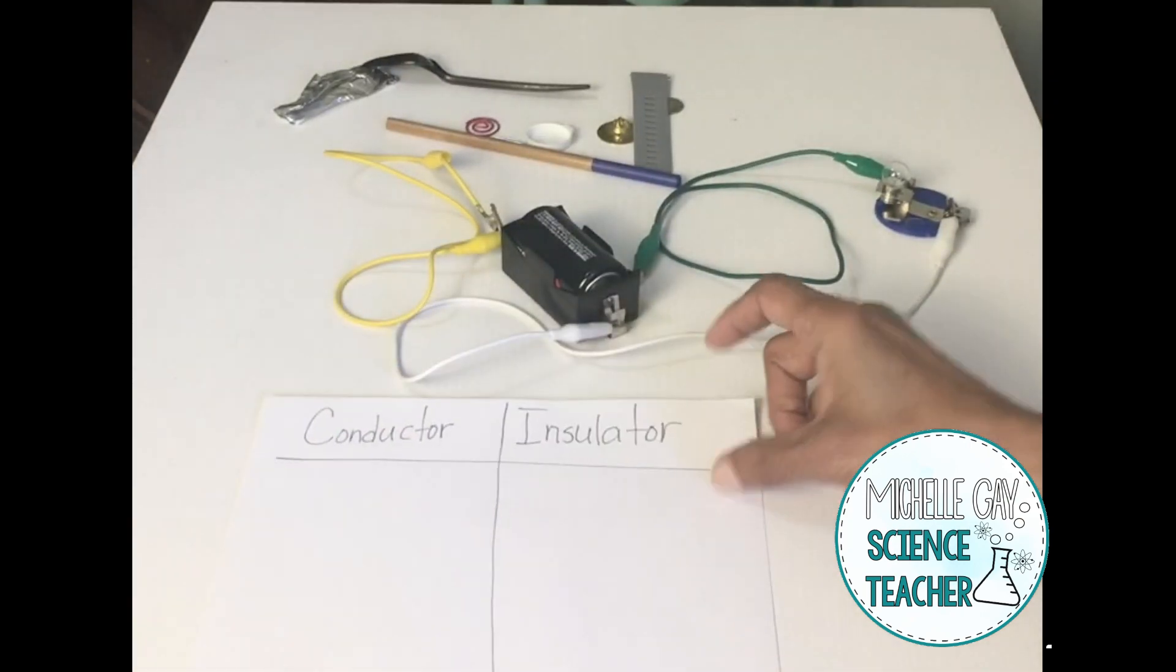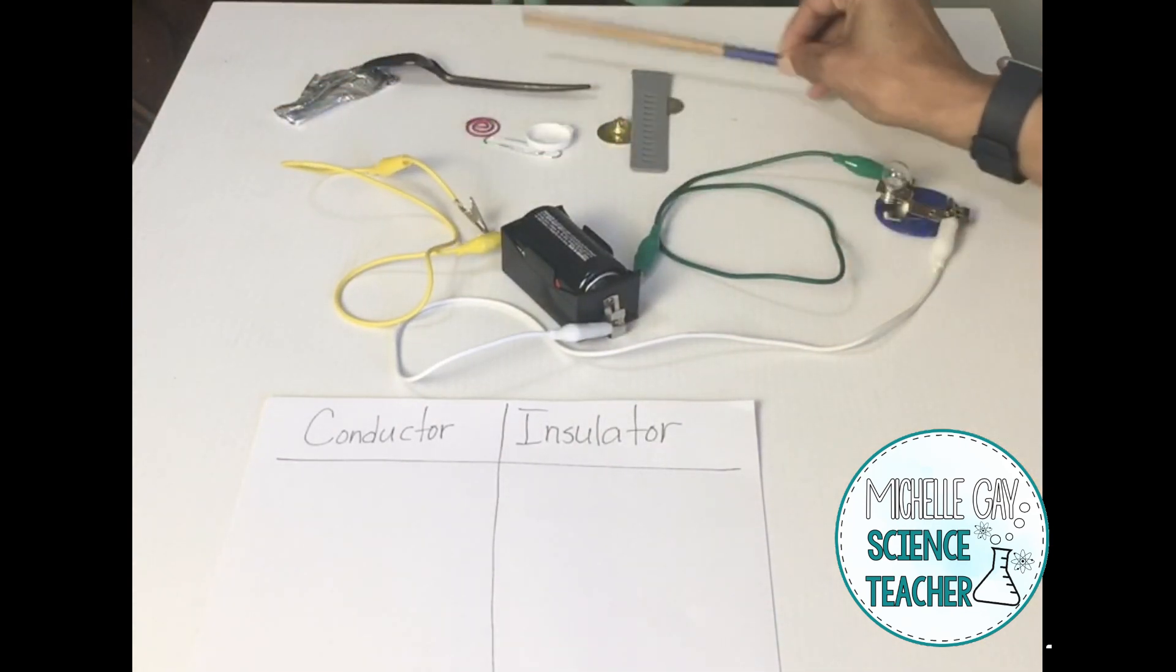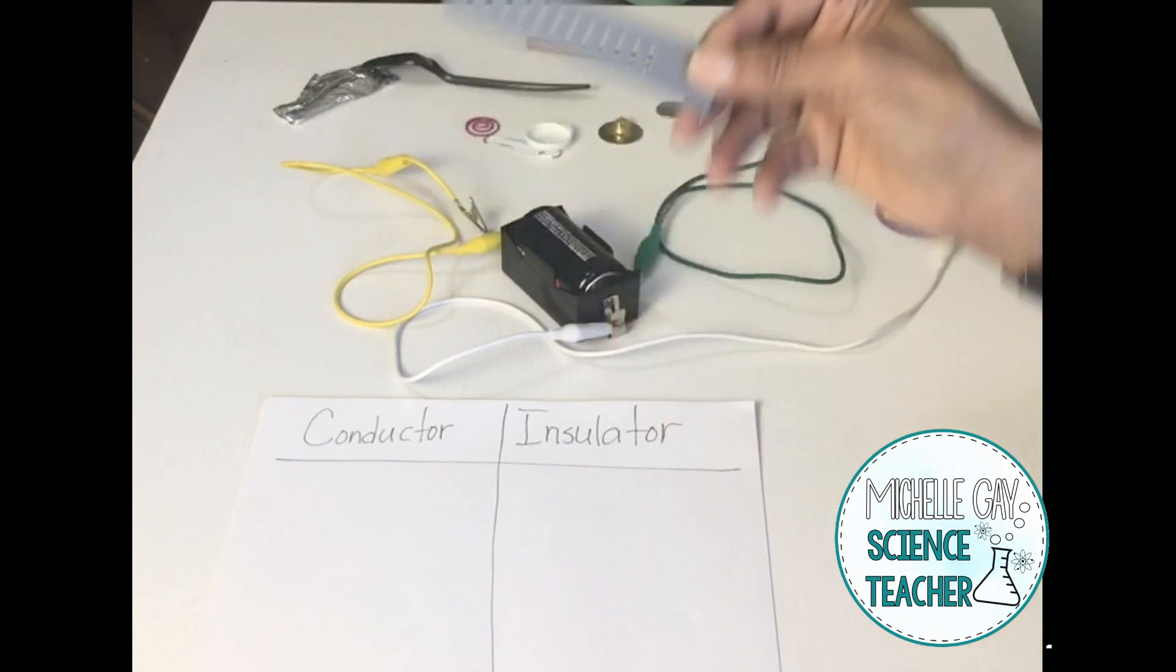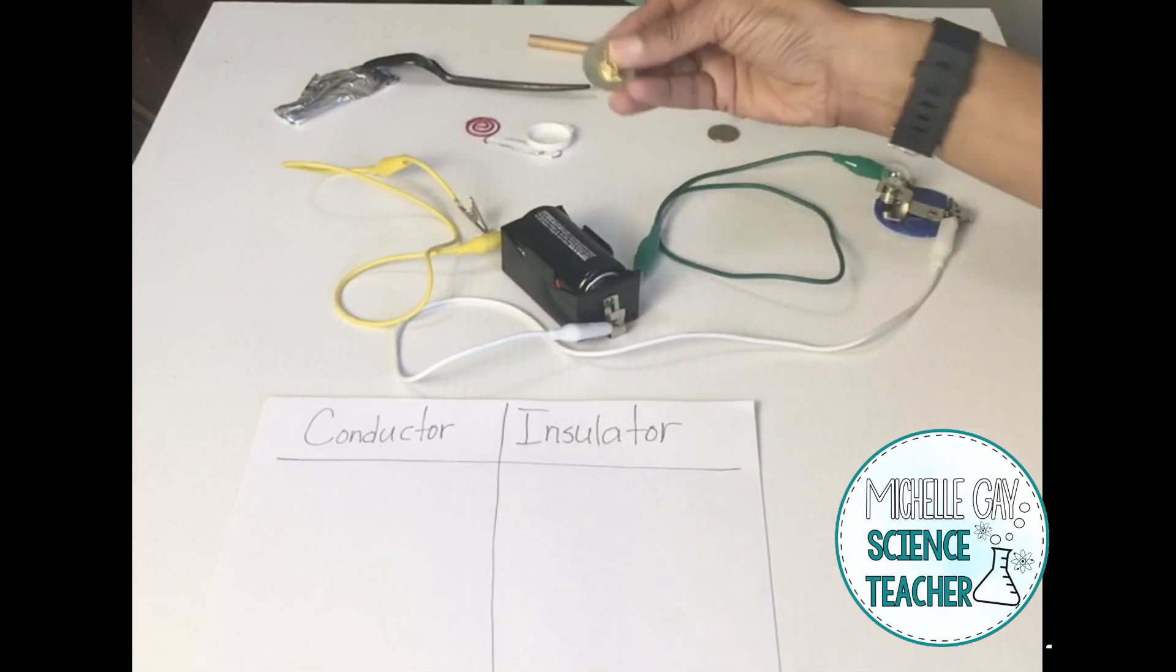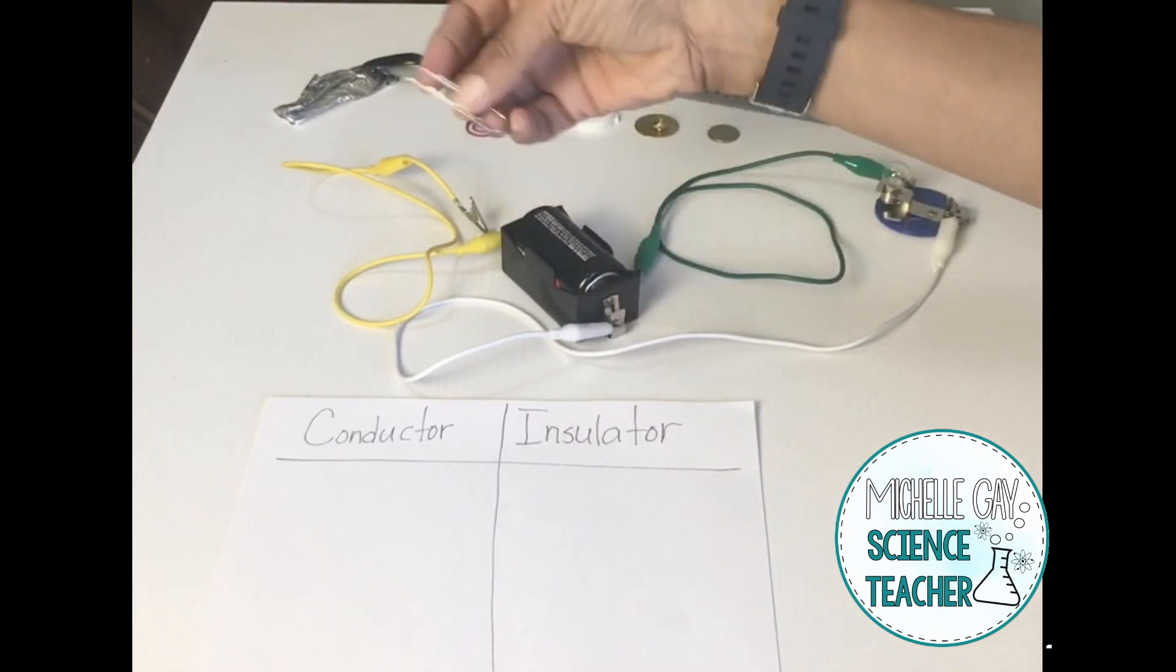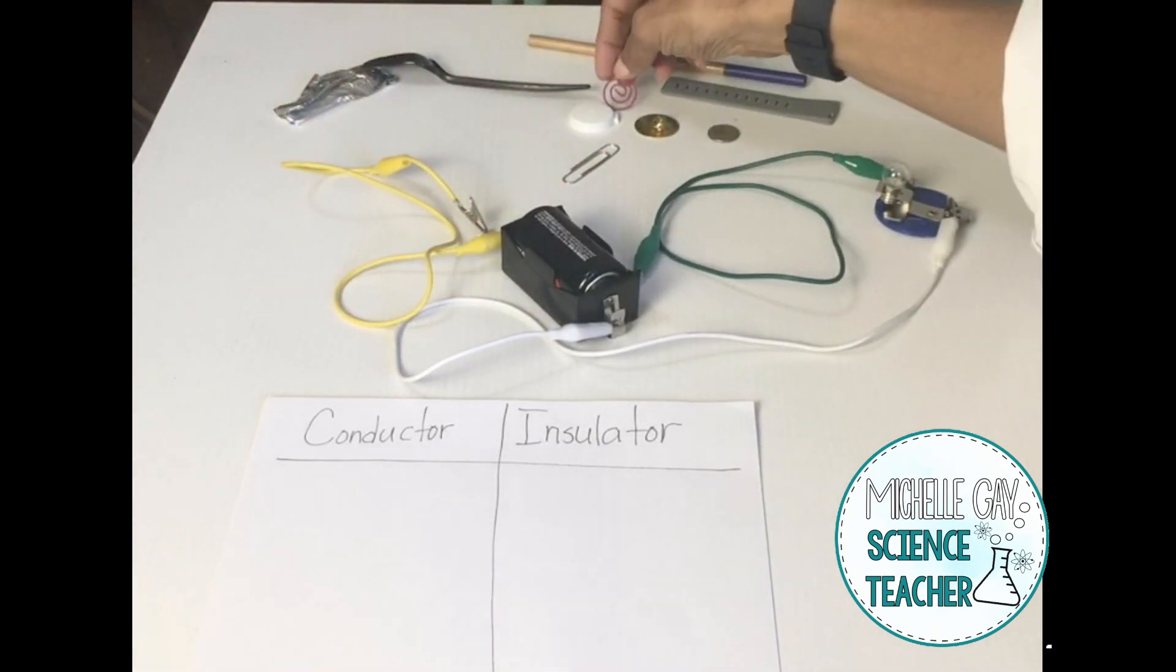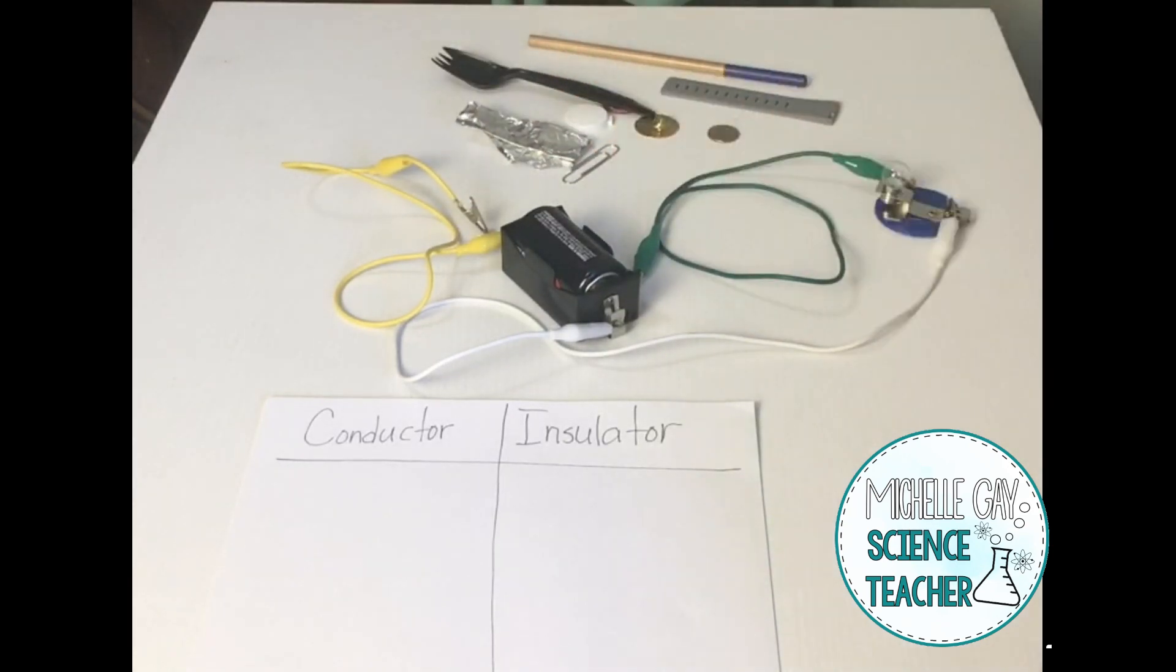We're going to test pencil or wood, a rubber or leather type band, a dime, this gold medal, plastic cap, paper clip, another type of paper clip, a spoon, and fork. Which of these do you think is insulators? Or which of these do you think are conductors?